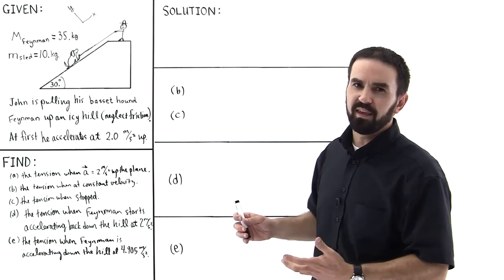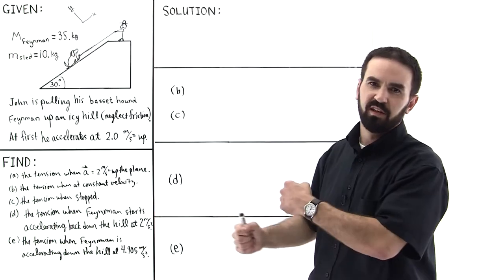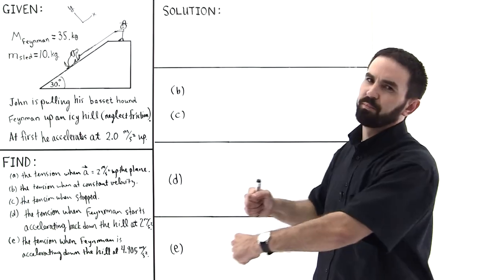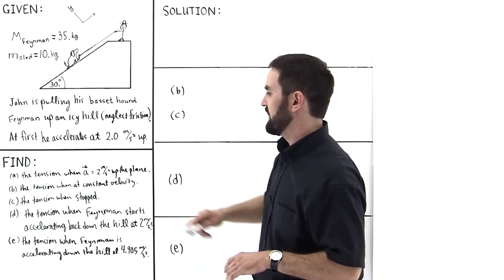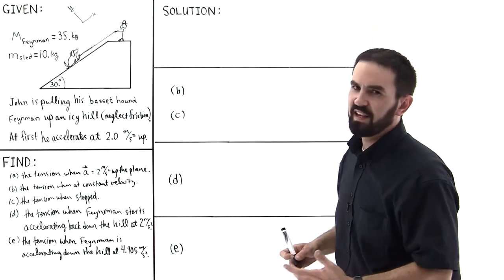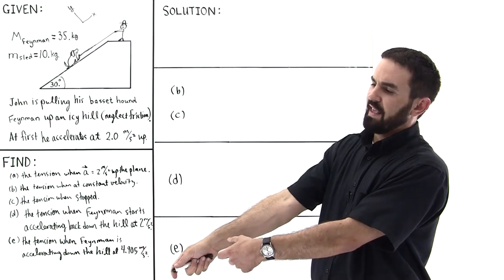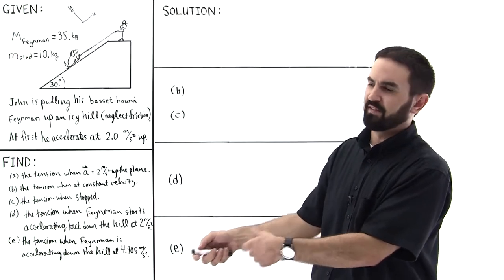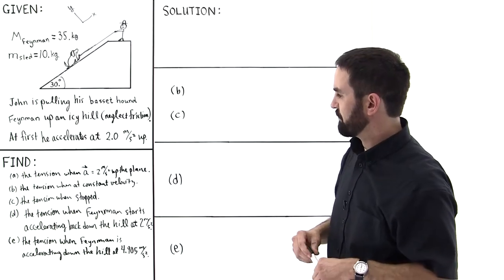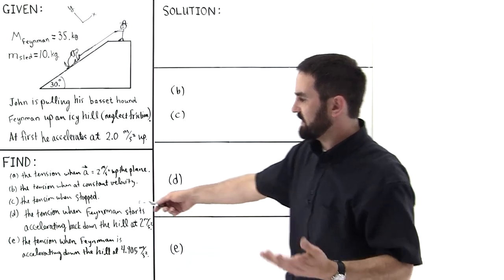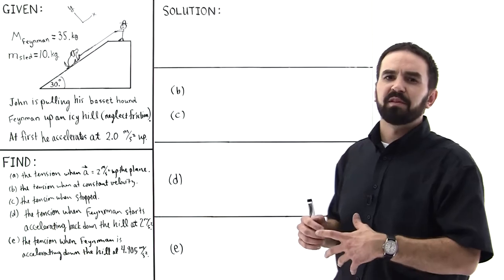In Part B, John gets tired and so he can't maintain this acceleration, and now he's just pulling Feynman up at constant velocity, so we're asked to find the tension in that case. In Part C, John just can't pull him up anymore even at constant velocity — Feynman has stopped and he's just holding him there, and we're asked to find the tension in that case.